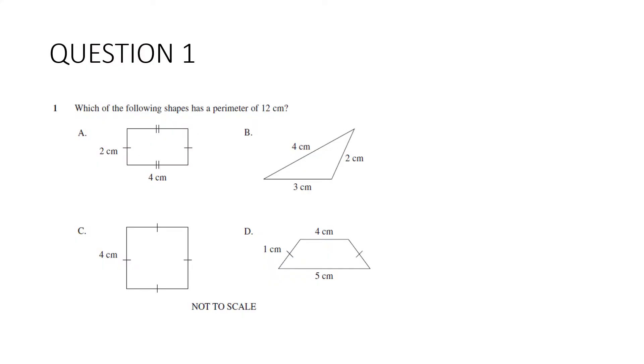Nice easy one to begin with. Which of the following shapes has a perimeter of 12cm? All we've got to do is add up the lengths around the shape. And we don't have to get very far because it's actually A. 4 plus 2 is 6, and 4 is 10, and 2 is 12. Make sure you take your time, don't rush these questions.